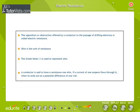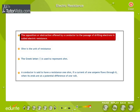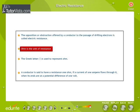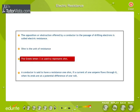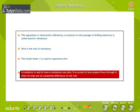Electric resistance: The opposition or obstruction offered by a conductor to the passage of drifting electrons is called electric resistance. Ohm is the unit of resistance. The Greek letter omega is used to represent Ohm. A conductor is said to have a resistance 1 Ohm if a current of 1 Ampere flows through it when its ends are at a potential difference of 1 Volt.